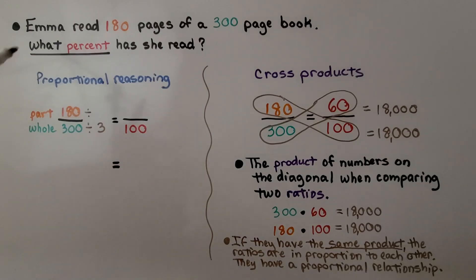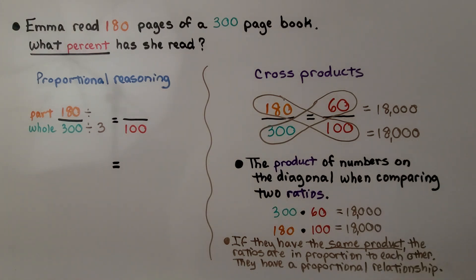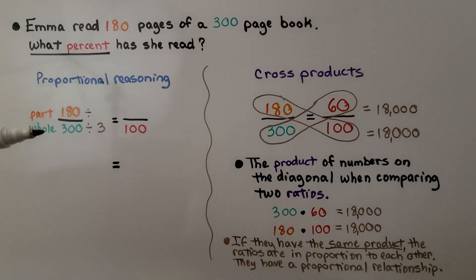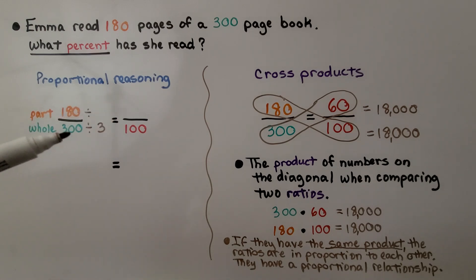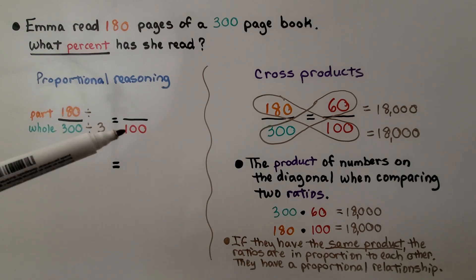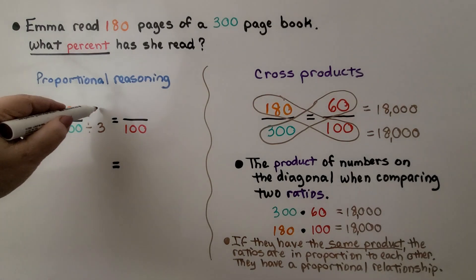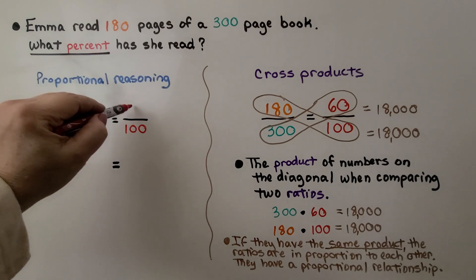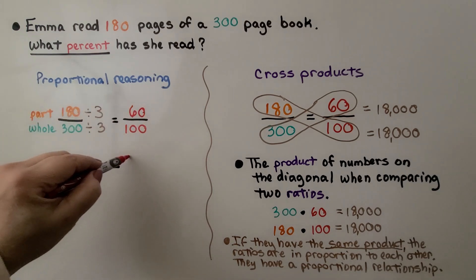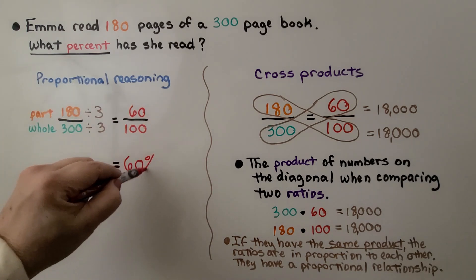Emma read 180 pages of a 300-page book. What percent has she read? We know the part she read was 180, and we know the whole — that's how many pages are in the book. We need to write it over 100 to find the percent. Since 300 needs to go down to 100, we're going to divide by 3. That means we divide 180 by 3, and 180 divided by 3 is 60. She read 60% of the book.